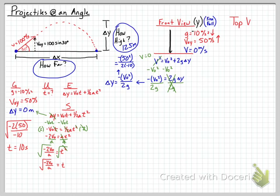Now that we have time, we can solve for the x-direction. We look at the top view — imagine hovering above the projectile. From this perspective, the object starts in one location and travels straight to another. You don't see it going up and back down; you just see it moving in a straight direction, which we call the x-direction.